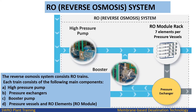The reverse osmosis system consists of RO trains. Each train consists of the following main components: A. High pressure pump with RO feed control valve. B. Bank of pressure exchangers with LP flow control valve. C. Booster pump with VFD for HP flow control. D. Pressure vessels and RO elements. E. RO module. And automatic valves and instrumentation.